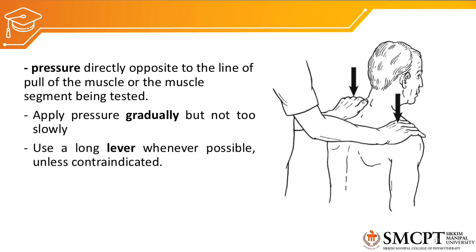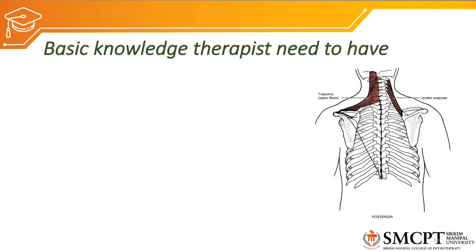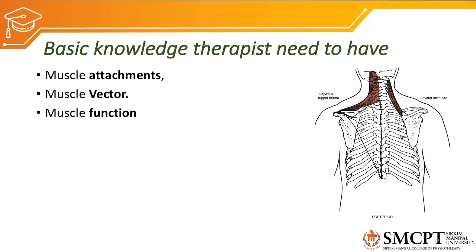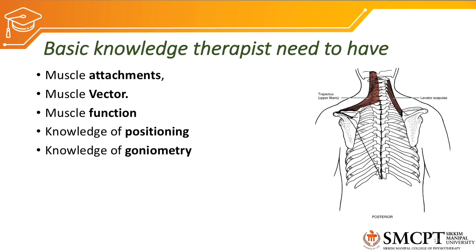Whenever possible, use a long lever for applying pressure. For example, when testing psoas for hip flexion, applying pressure at the knee joint area is a short lever, while applying resistance at the ankle joint area or shin bone is a long lever. The test is most reliable when the same therapist retests the MMT — for example, if therapist X tests on day one, therapist X should also test on day 15.